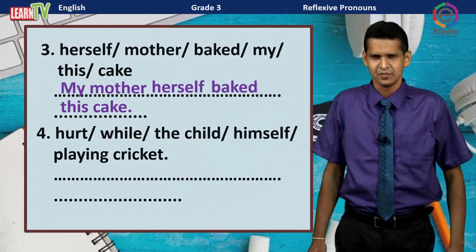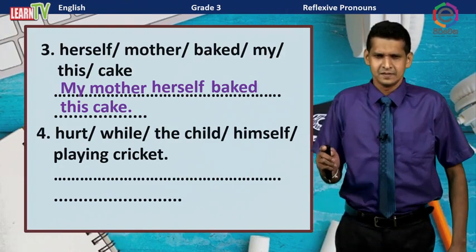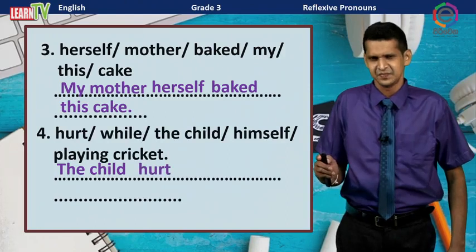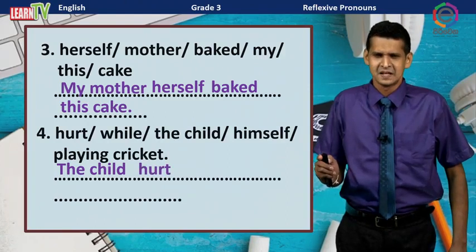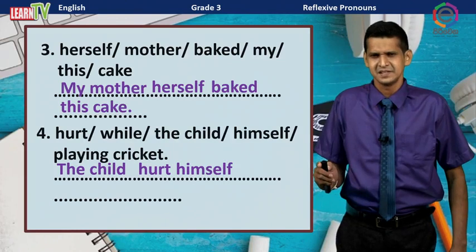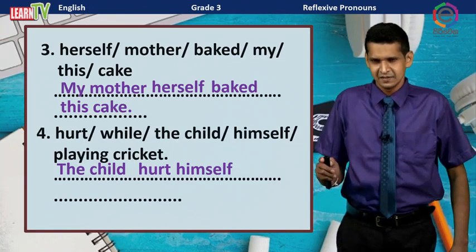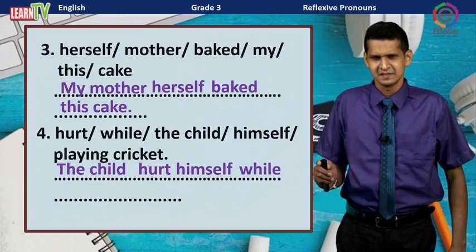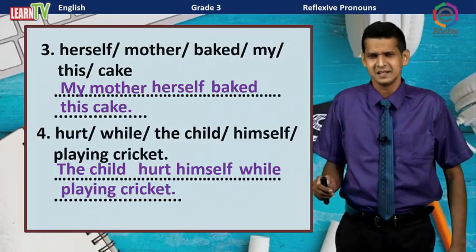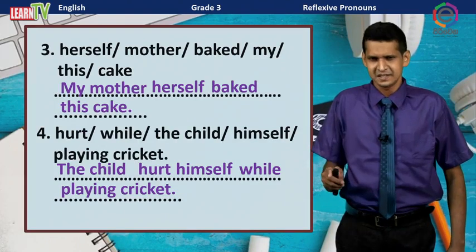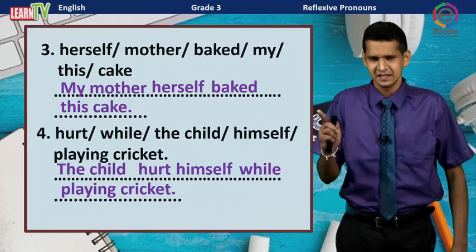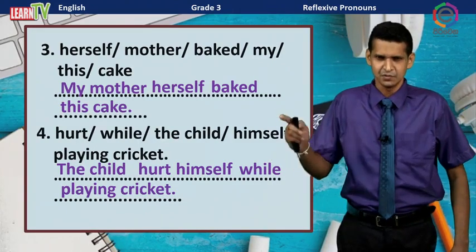Number four: The subject is 'the child,' the verb is 'hurt.' The sentence is: The child hurt himself while playing cricket. The subject pronoun for 'the child' is 'he,' so the reflexive pronoun is 'himself.'